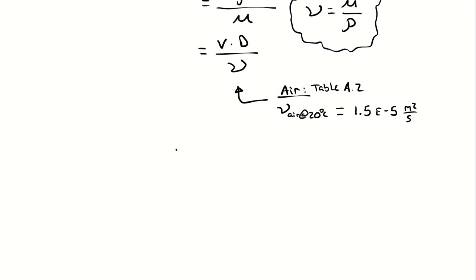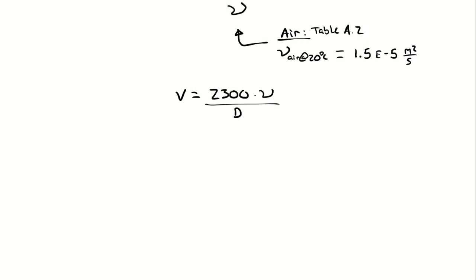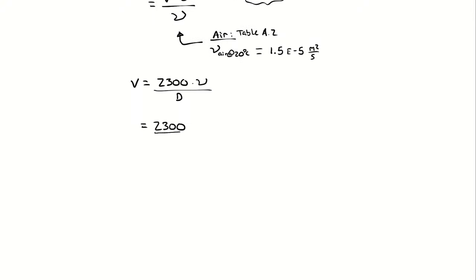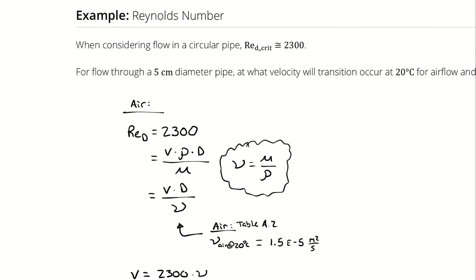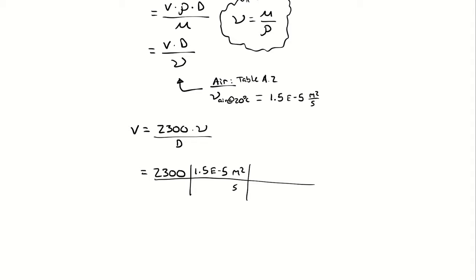If we're solving for velocity, that means we'll take 2,300, because that's our critical Reynolds number, which is what we are trying to calculate a velocity for, times 1.5 times 10 to the negative 5th meters squared per second. And we are dividing by the diameter of our pipe. The diameter is 5 centimeters. And because we want a velocity in meters per second, we're going to have to convert centimeters to meters.